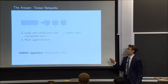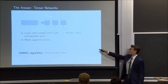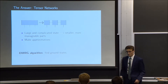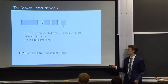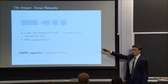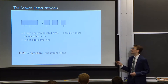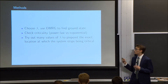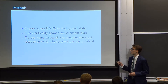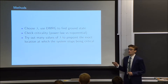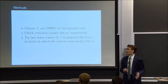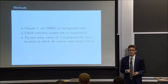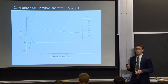Tensor networks let us take a large and complicated state and break it down into smaller, more manageable parts. We can also make approximations along the way, which reduces the dimensionality of the problem. We use the DMRG algorithm to find ground states: it takes each of the individual smaller parts and minimizes the energy with respect to them individually, and it's quite efficient. So for any given lambda, we use DMRG on the tricritical quantum Ising model to find its ground state, check for criticality by seeing whether the correlation function is power law (critical) or exponential (not critical), and try out as many values of lambda as necessary to pinpoint the exact phase transition.